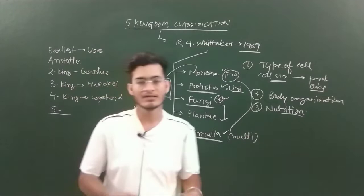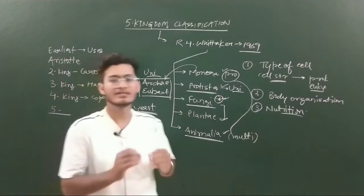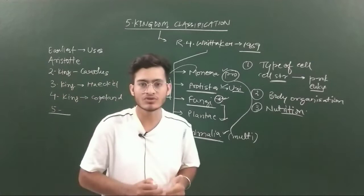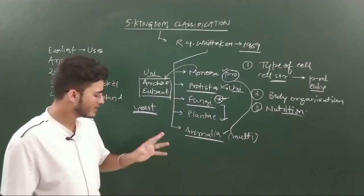In Monera you have cyanobacteria or blue-green algae which can synthesize their own food. Fungi are basically saprophytic or parasitic in nature - they depend on dead and decaying matter for their food, so they are heterotrophic. Animalia shows holozoic mode of nutrition, they are also heterotrophic and depend on Plantae kingdom for their nutrition.